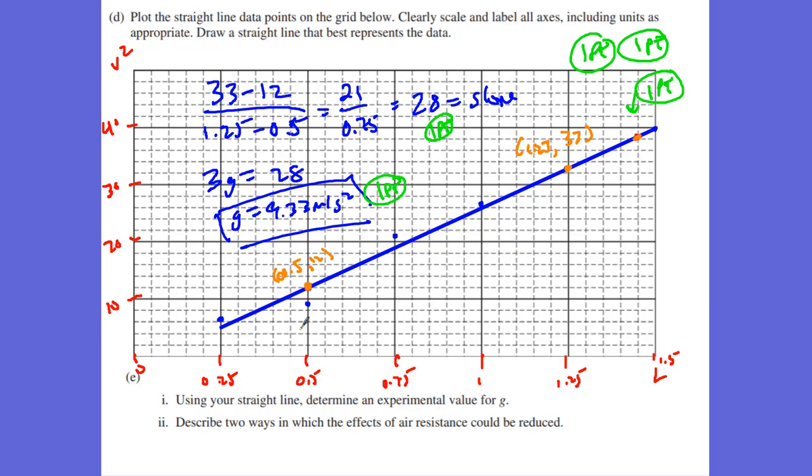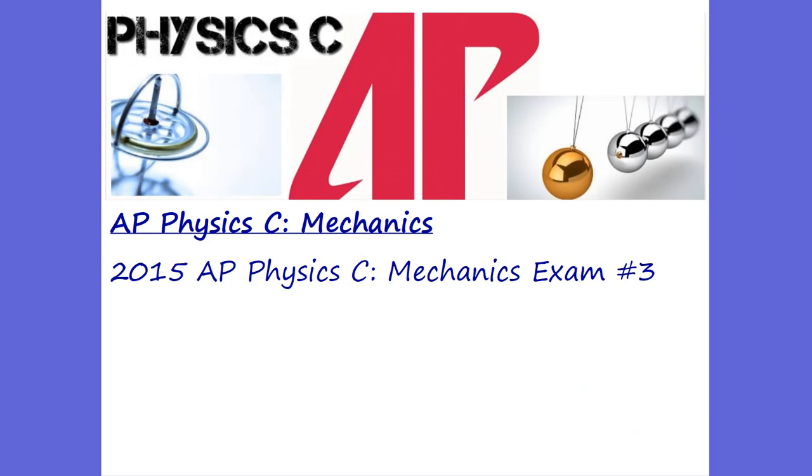And then E2. It says, describe two ways in which air resistance could be reduced. Maybe doing it in a vacuum. That's one way. Doing it in a vacuum. That's always a way to get air resistance released. Using shorter rod lengths. More denser rods. Aerodynamics. Aerodynamic rods. There's always these terms. You gotta come up with at least two of these to get two points. Two points. And that was a great laboratory problem for 2015 AP Physics C exam problem number three.